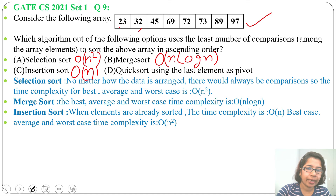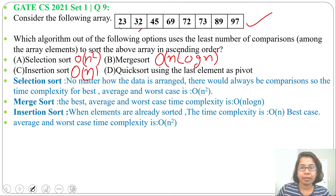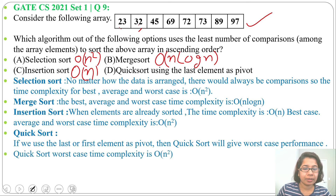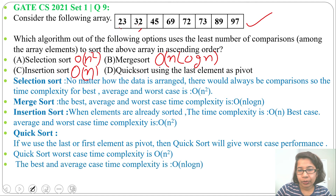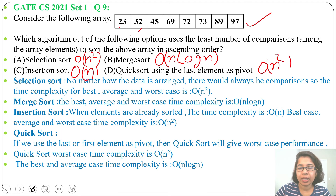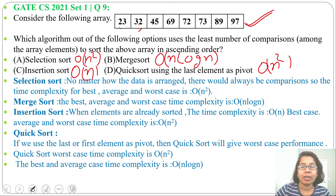Next is quicksort using last element as pivot. When the last element or first element is used as pivot and the array is already sorted, that is the worst case for quicksort. In worst case, quicksort running time is O(n²), whereas best case is O(n log n). So here, running time will be O(n²). To summarize: selection sort is O(n²), merge sort is O(n log n), insertion sort is O(n), and quicksort using last element as pivot is O(n²) — all for this already sorted array.